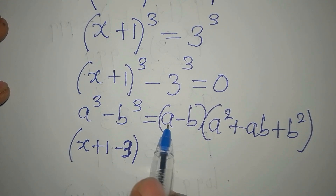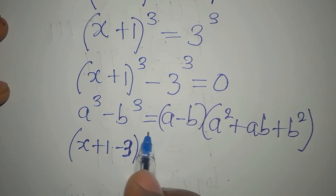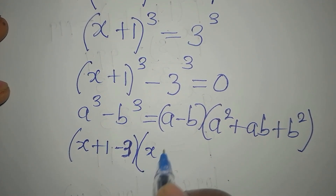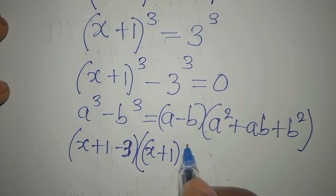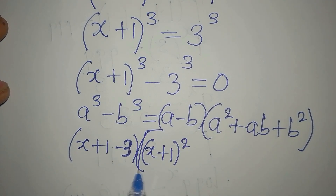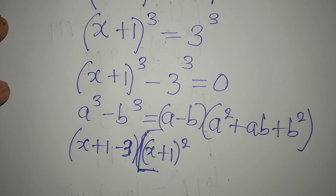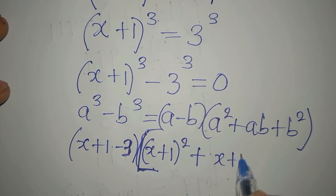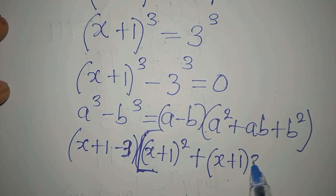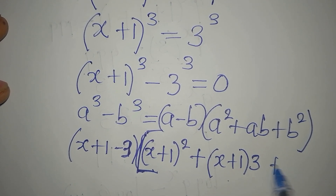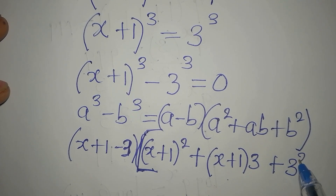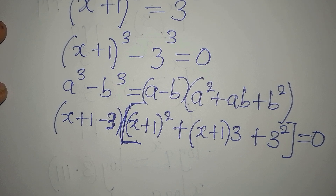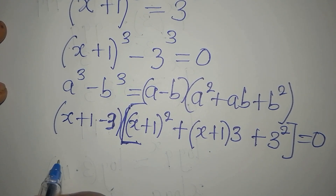So the first bracket gives us (x + 1) - 3. In the second bracket, a² becomes (x + 1)², then plus a·b which is (x + 1)·3, then plus b² which is 3², and everything equals 0.